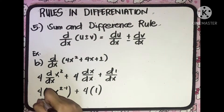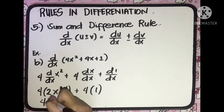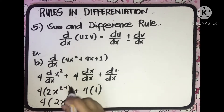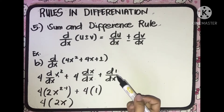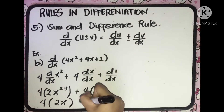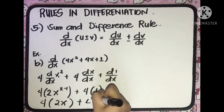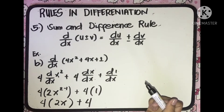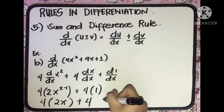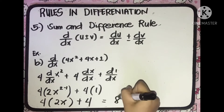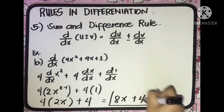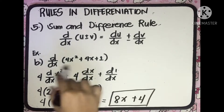Simplifying: 4 multiplied by 2x — since 2 minus 1 equals 1, so we have 2x — plus 4 multiplied by 1, which equals 4. Multiplying 4 by 2x gives 8x, plus 4. That is the derivative of the given function: 8x plus 4.